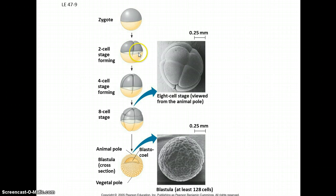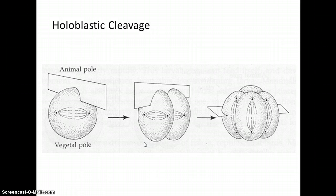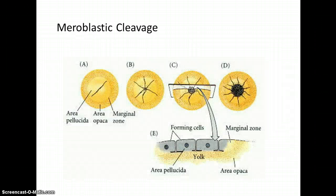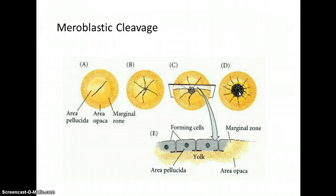In some animals you get holoblastic cleavage, where you get a complete splitting into two, then four, then eight cells of approximately the same size. But in others — particularly birds, reptiles, and animals that lay eggs — you have meroblastic cleavage, where most of the cell splitting occurs at the animal pole end. The yolk remains as a large mass that doesn't split into separate cells. The yolk contains a lot of nutrients that provide food for the embryo developing at the animal pole end in meroblastic cleavage.